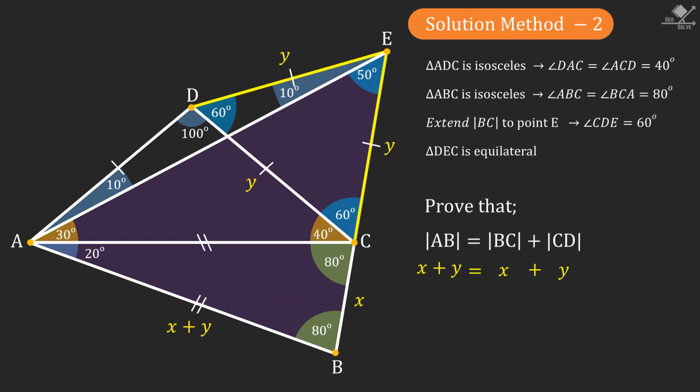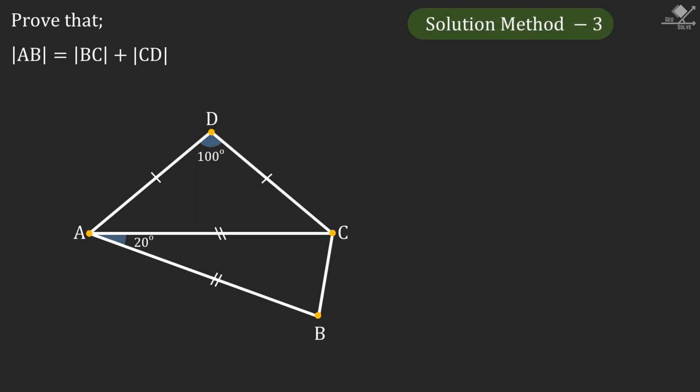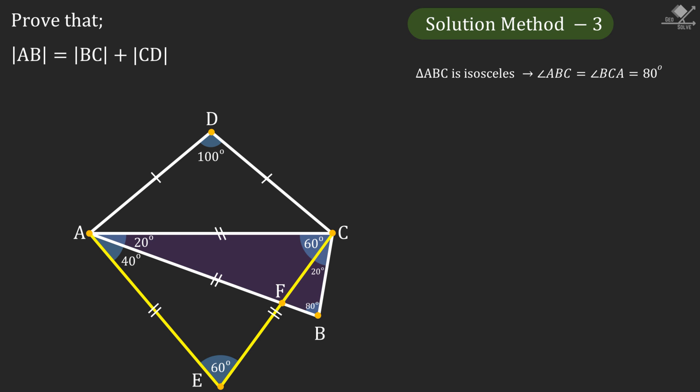Now let's continue with our third solution method. First let's draw the equilateral triangle ACE. Since triangle ABC is an isosceles triangle its base angles will be 80 degrees, and from here angle CFB will be 80 degrees. Now let's call the equal sides of this triangle as x and line segment FE as y. Then the other sides of the equilateral triangle will be x plus y units.